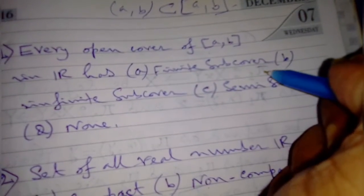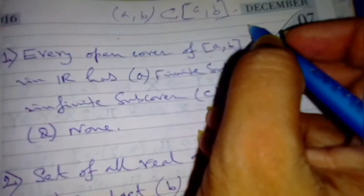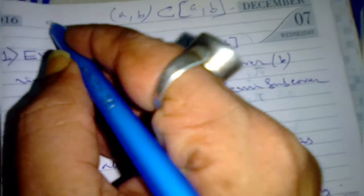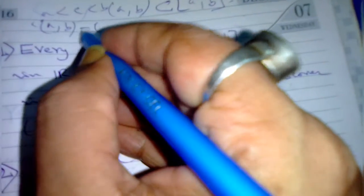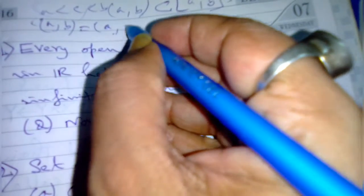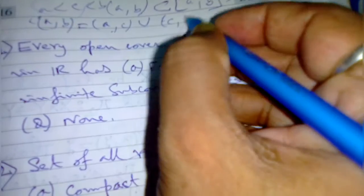And if we find this finite number of subcovers, if a less than c less than b, then we are making this subcover [a,c]. That is, we can make it in this way: [a,c] and union of [c,b] in this manner.